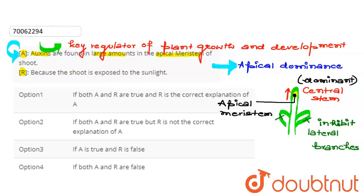Okay, the reason is: because the shoot is exposed to the sunlight. This reason, that the shoot is exposed to sunlight, this statement is right. Shoot is exposed to sunlight easily. Right?